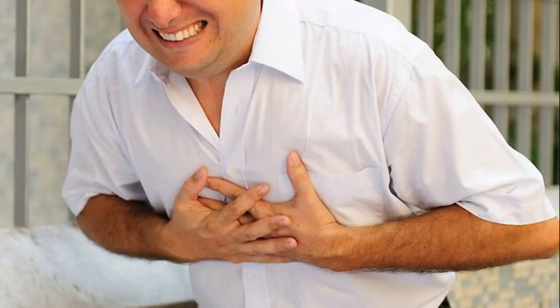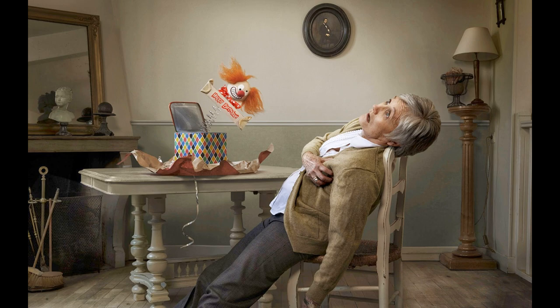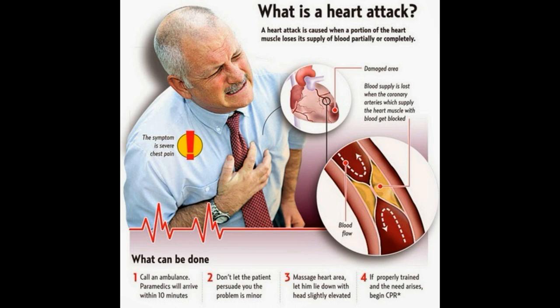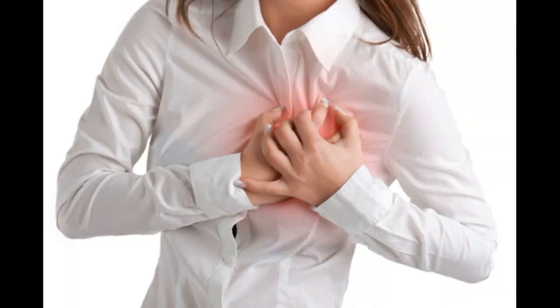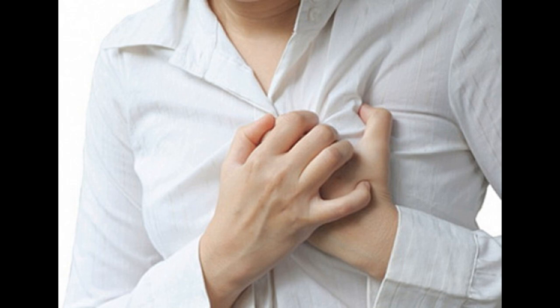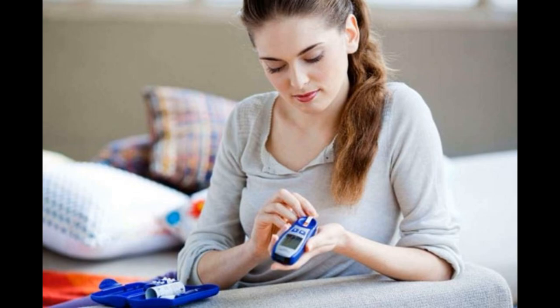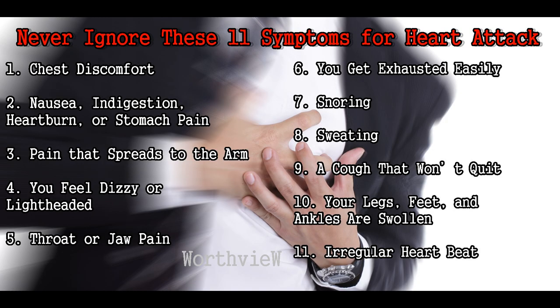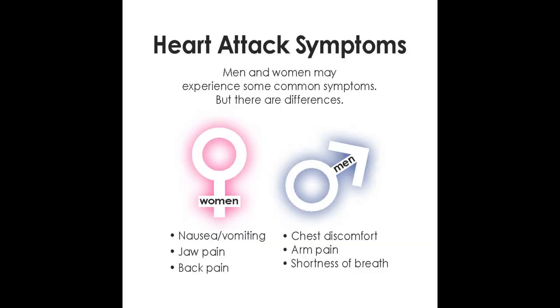As each chamber of the heart contracts, it pushes blood into the ventricle or out of the heart into an artery. Valves open and close in response to pressure changes as the heart contracts and relaxes. Each of the four valves helps ensure one-way flow of blood by opening to let blood through and closing to prevent backflow.